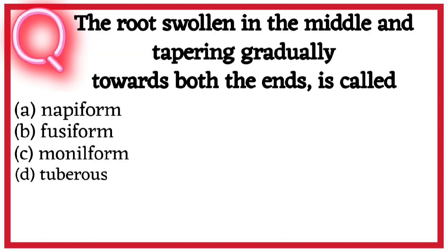Fourth question. The root swollen in the middle and tapering gradually towards both the ends is called A. Napiform, B. Fusiform, C. Moniliform, D. Tuberous. So correct answer hai option B. Fusiform.